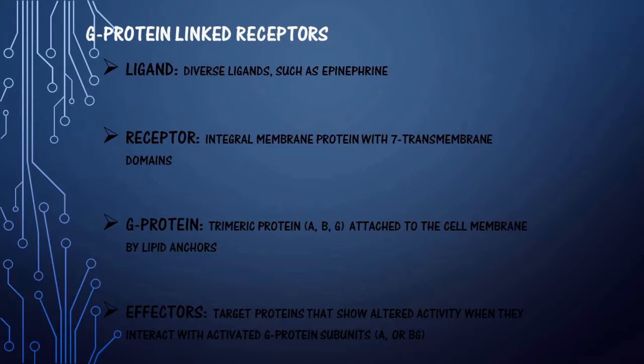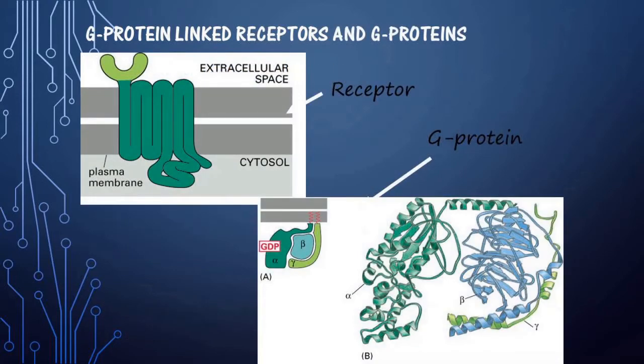G protein-linked receptors are the third group of receptors and the ligands are very diverse, like epinephrine. The receptor is an integral membrane protein with seven transmembrane domains. The G protein is a trimeric protein with alpha, beta, gamma subunits attached to the cell membrane by lipid anchors. The effectors are target proteins that show altered activity when they interact with activated G protein subunits.